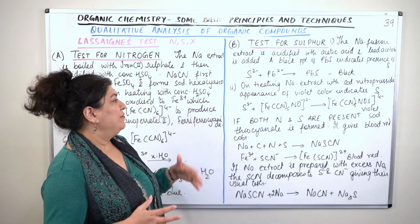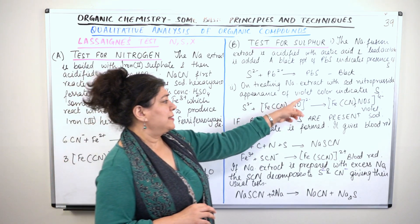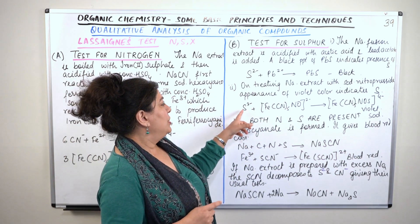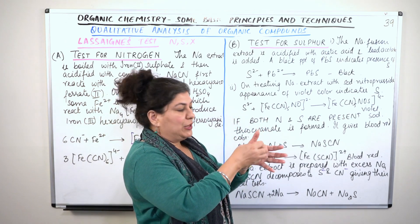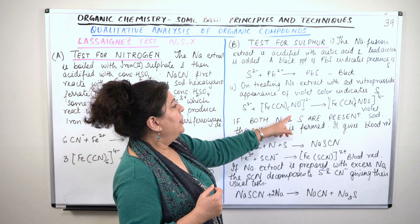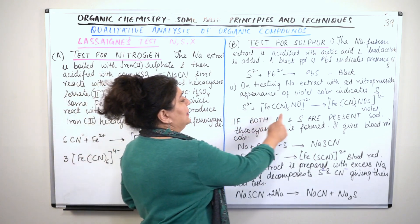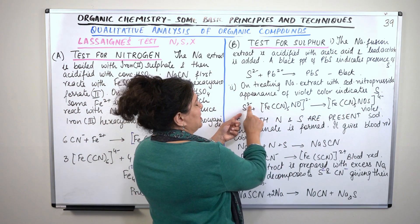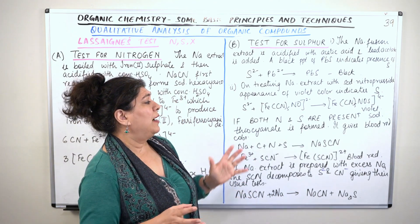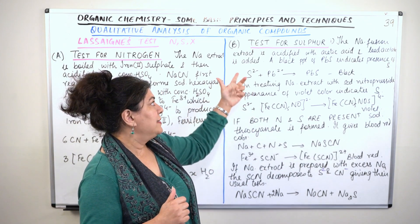Another confirmation test for sulfur: add sodium nitroprusside to the sodium extract. Sodium nitroprusside reacts with the sulfide ion (S²⁻) present in the extract. The nitroprusside ion carries a charge of 2 negative, and when it combines with the sulfide ion (also 2 negative), the resulting compound has a charge of 4 negative. The formation of this compound gives a violet color. When you observe violet color, you confirm that sulfur is present in the compound.